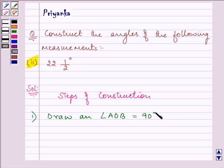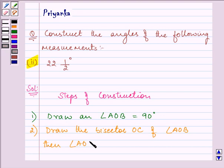This angle has been explained to you in the first question. Then the second step will be draw the bisector OC of angle AOB and therefore angle AOC will be equal to 45 degrees. This was your second question explanation.